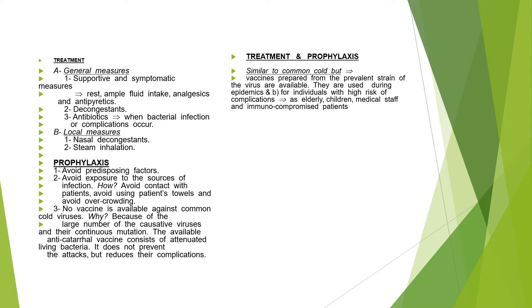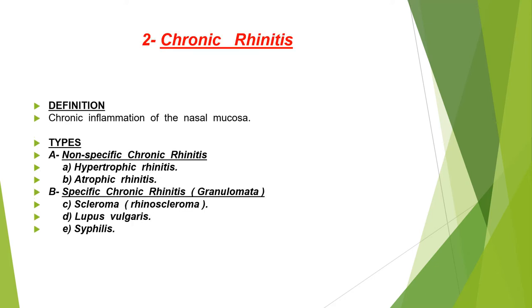The available vaccine uses anti-bacterial living bacteria to reduce complications. Chronic rhinitis is chronic inflammation of the nasal mucosa. It is divided into non-specific chronic rhinitis and specific chronic rhinitis (granulomata). Non-specific types include hypertrophic rhinitis and atrophic rhinitis. Specific chronic rhinitis granulomata include rhinoscleroma, lupus vulgaris, and syphilis.